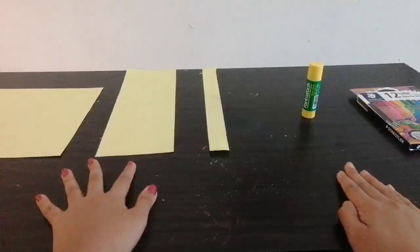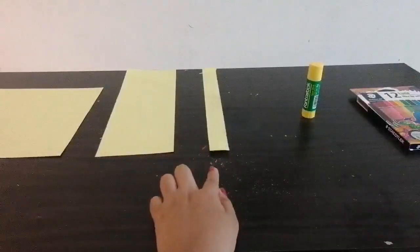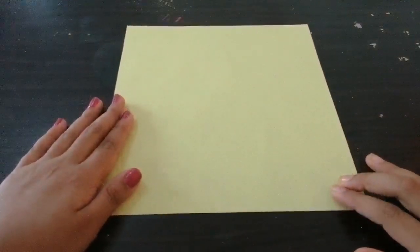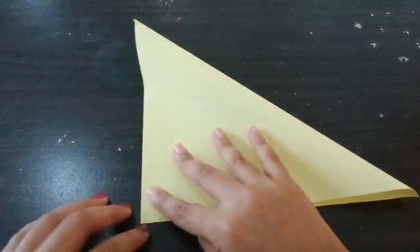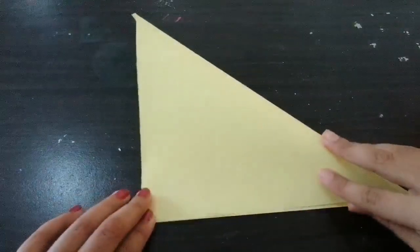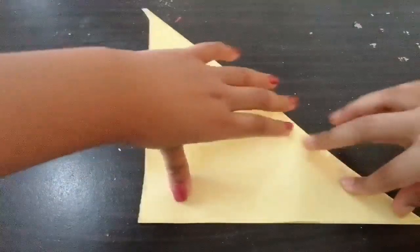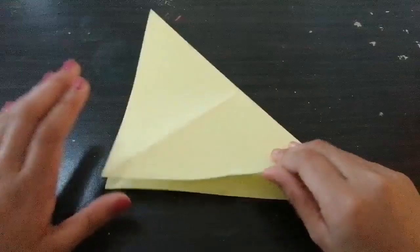First we need to take the 21 by 21 square paper. We need to fold it into a triangle like this. Fold it properly. After we fold it like this, we need to open it again.